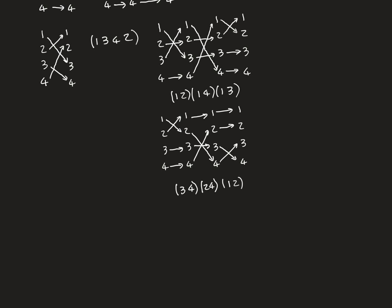This breakdown into transpositions is not unique. Here is another composition of three transpositions that produces the exact same permutation but uses completely different transpositions. We have (1 2) composed with (2 4) composed with (3 4). Following through: 1 goes to 2, to 4, to 3 — correct; 2 goes to 1, fixed — correct; 3 goes to 3, to 3, to 4 — correct; 4 goes to 4, to 2, to 2 — correct. So this is a different breakdown into transpositions, but it still uses three of them.